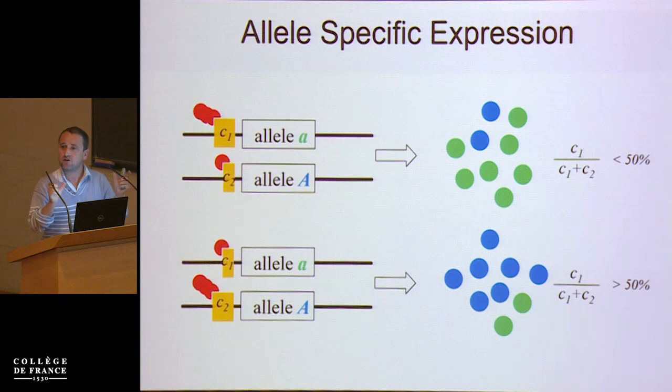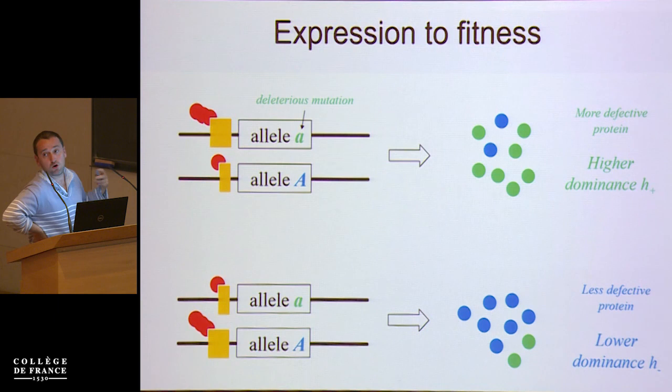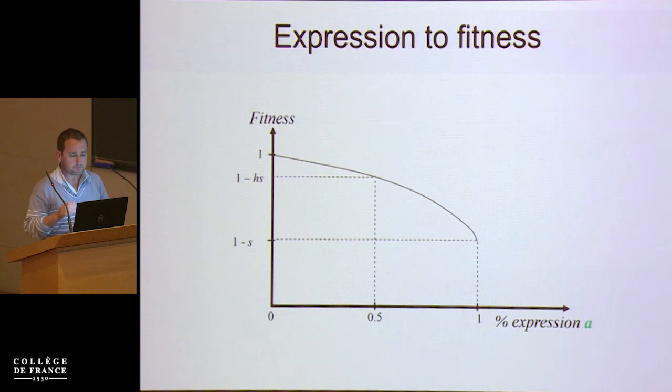If this allele A is a deleterious mutation on the gene, then if you've got more defective protein, the fitness of an individual like this will be lower than at 50% defective protein. And the reverse: if you've got fewer defective proteins, your fitness will be higher. So in terms of dominance, it is as if here you've got a slightly higher dominance for the deleterious mutation, and there a slightly lower dominance of the deleterious mutation.